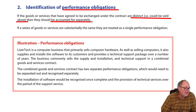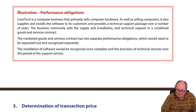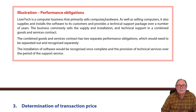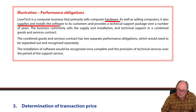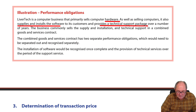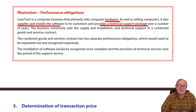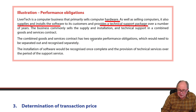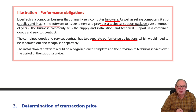Pause the tape for a minute and have a read of LiverTech. This business sells hardware, supplies and installs software, and provides a technical support package — one of those helplines. They sell them separately, and you can also buy them as a bundle. There are effectively a series of separate performance obligations, and therefore they should be accounted for separately.